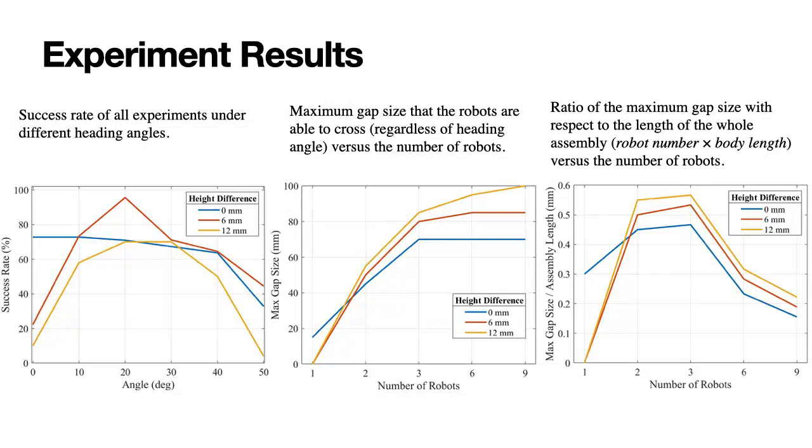You might notice that with one robot with larger height difference, the gap size it can cross is zero. This is because when the height difference is large, when one robot goes across a gap, it might flip. So it's not counted as a successful crossing.